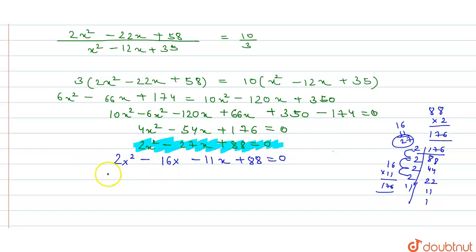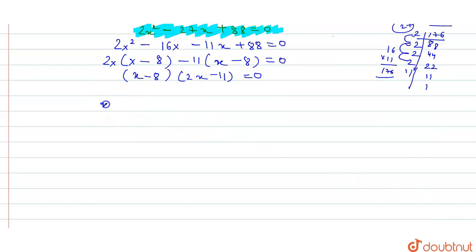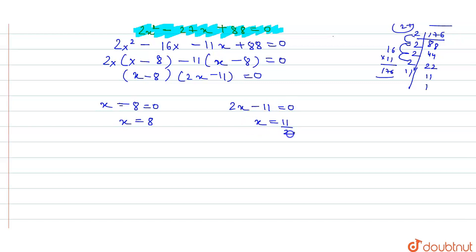Taking 2x common from the first pair gives 2x(x minus 8), and taking minus 11 common gives minus 11(x minus 8) equals 0. So the two factors are (x minus 8) and (2x minus 11). Setting each to zero: x minus 8 equals 0 gives x equals 8, and 2x minus 11 equals 0 gives x equals 11 by 2. So the roots of this quadratic equation are x equals 8 and x equals 11 by 2. Thank you.